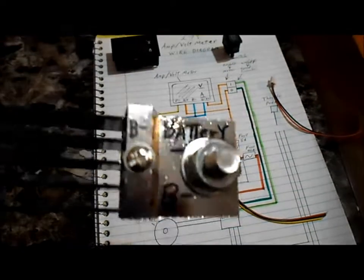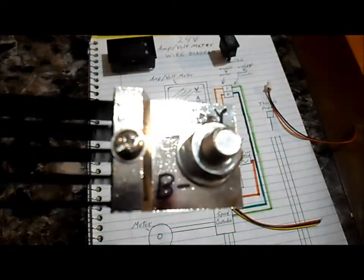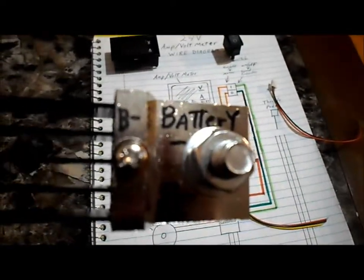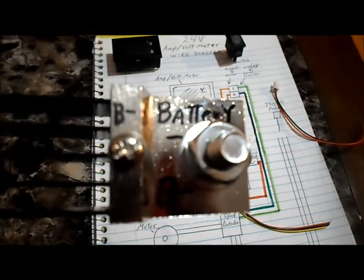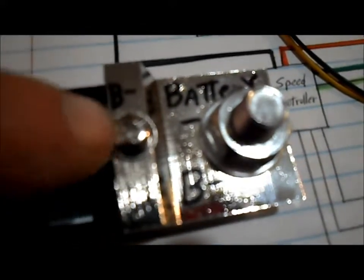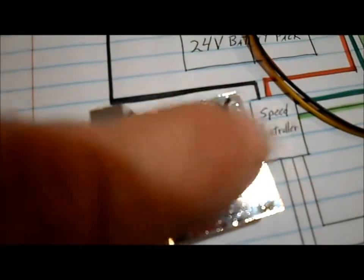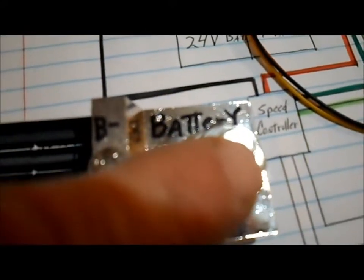B minus stands for battery minus. So this side of the shunt would connect right to the minus of the battery. And then our blue wire B minus will hook right to this little pole here. So this hooks right to the minus of the battery.